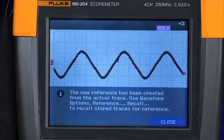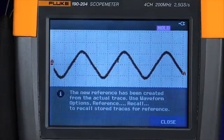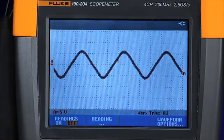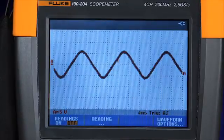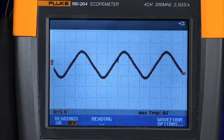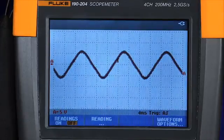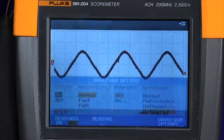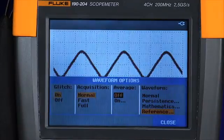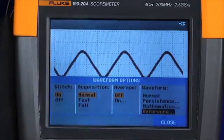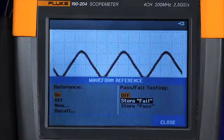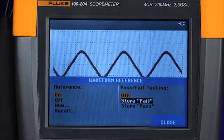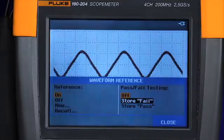The next step in setting up the pass-fail test mode is to set up the oscilloscope to decide what it should capture, whether to store a waveform within the envelope in the pass mode or store the waveform when it exceeds that envelope. Press the waveform option menu, select reference, and then choose either store on fail when the unknown trace exceeds the envelope, or store on pass when it remains within the envelope. For this test, we'll choose store on fail.